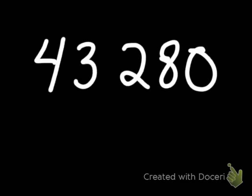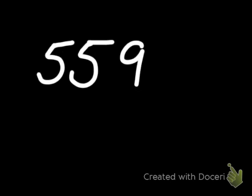Look at this number: 43,280. This number is also divisible by 5 because the last digit is a 0. Remember, our rule for 5 is: does it end in a 0 or a 5? The number 559 is not divisible by 5 because, if you look at the last digit, it doesn't end in a 0 or a 5. So this number is not divisible by 5.